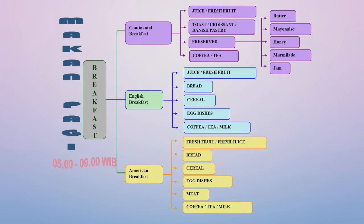Pertama-tama kita akan memahami makan pagi atau yang disebut dengan breakfast, atau dalam bahasa Indonesia disebut sarapan. Di masing-masing daerah memiliki menu breakfast masing-masing. Ada tiga menu breakfast yang paling terkenal, yaitu yang pertama continental breakfast, yang kedua English breakfast, dan yang ketiga American breakfast.